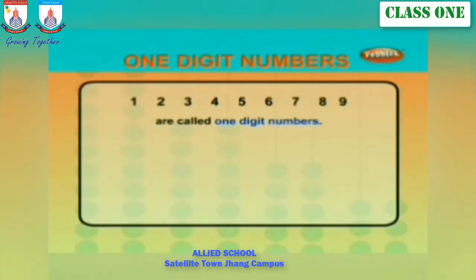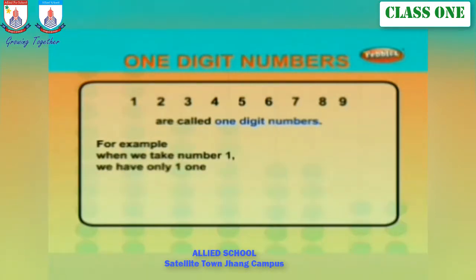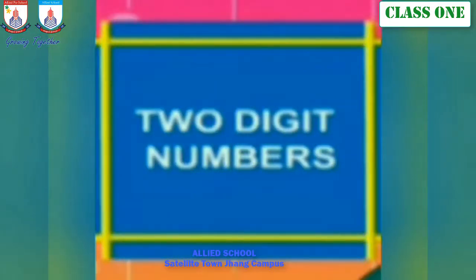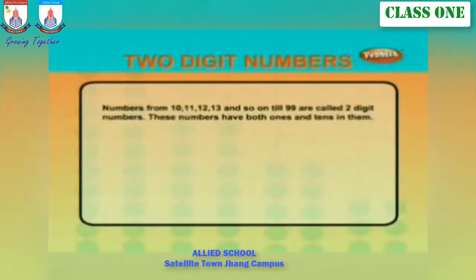For example, when we take number one, we have only one one. The number two has two ones, and the number five has only five ones.